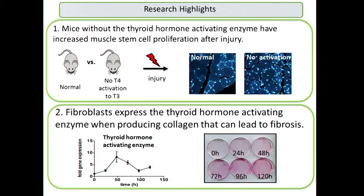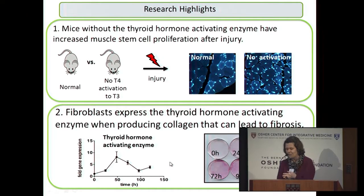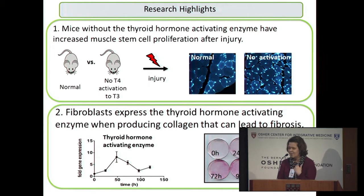Additionally, when muscle isn't properly repaired, you get overgrowth of fibroblasts, collagen production, and fibrosis. We found that when we isolated fibroblasts from the muscle stem cell niche and cultured them, increasing collagen production was accompanied by an increase in the thyroid hormone-activating enzyme. We think this local generation of T3 is leading to collagen production and fibrosis. We hope to understand this better and use it to treat patients with fibrosis. We're also going to explore whether these changes might be targets affected by the beneficial effects of stretching. I thank the Osher Center for supporting this research.